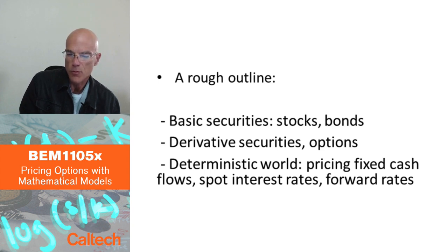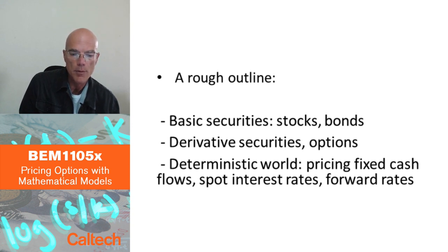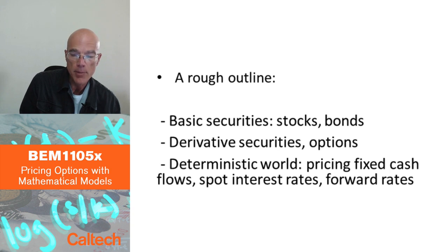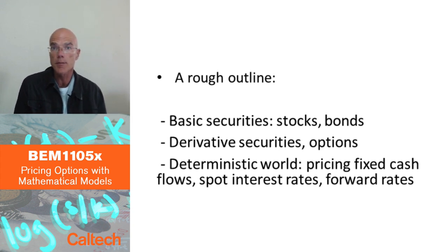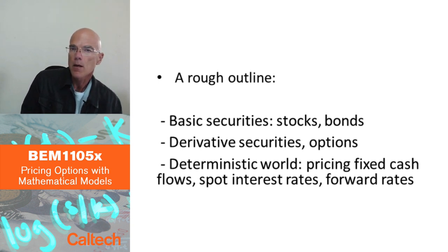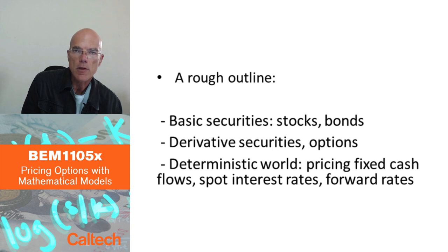First, we are going to make sure that we all know what the basic securities are — stocks and bonds. Then we are going to introduce derivative securities and in particular options. After we talk about basic uses of options and basic definitions, we are going to start pricing payoffs that are paid in the future. That's the main topic of the course: how to price something that will be delivered in the future. We'll start with the easiest case — pricing payoffs which are known, for example knowing you will get $100 in three months. Those are deterministic, non-random payoffs.